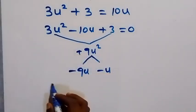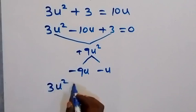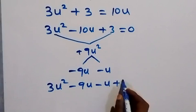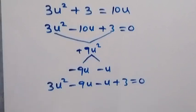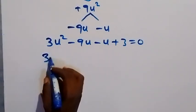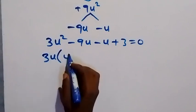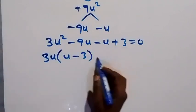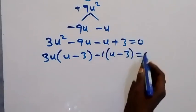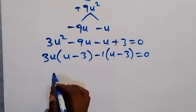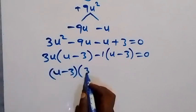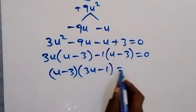We rewrite the equation as 3u² - 9u - u + 3 = 0. Grouping the first two terms, we factor out 3u to get 3u(u - 3). From the last two terms, we factor out -1 to get -1(u - 3).